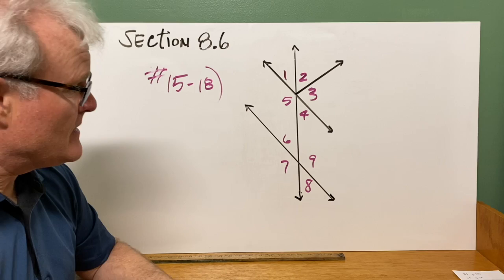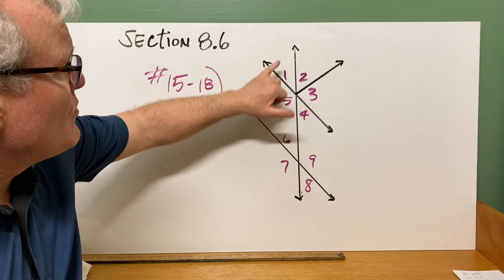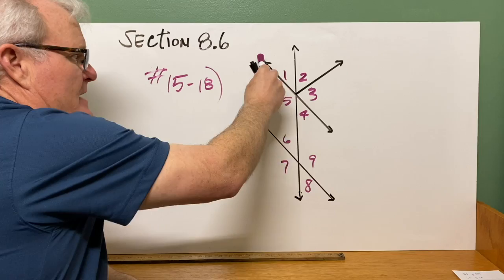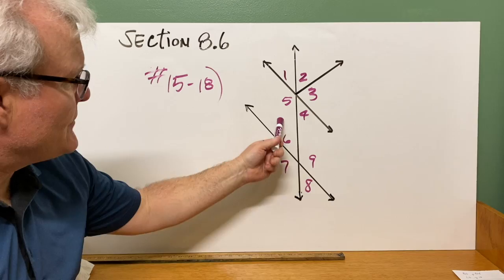Also, it asks about vertical angles. Vertical angles, remember, would be like 1 and 4. The bow tie, they're angles that are formed by two lines that intersect like that and they're opposite each other. We also have two sets of vertical angles down here. 6 and 8 would be vertical. And 7 and 9.